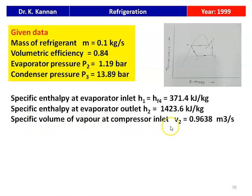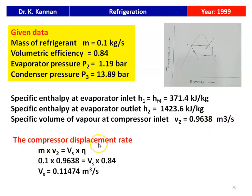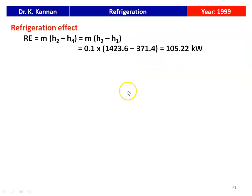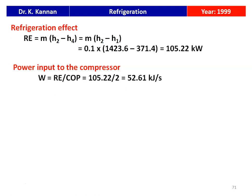Compressor displacement rate: actual volume = Vs × volumetric efficiency, so 0.1 × 0.9638 = Vs × 0.84, giving Vs = 0.11474 m³/s. Refrigeration effect RE = m × (H2 − H1) = 0.1 × (1423.6 − 371.4) = 105.22 kJ/s. Power input to the compressor W = RE / COP = 105.22 / 2 = 52.61 kW.